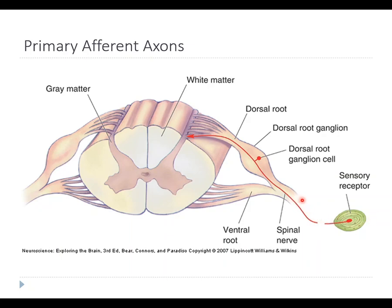The axon from the Pacinian corpuscle forms part of a spinal nerve, which can also contain motor axons from the ventral roots. When a sensory receptor is activated — say something touches this corpuscle — an action potential is generated and travels all the way up the spinal nerve to the dorsal ganglion, but it actually just bypasses the cell body. The cell body doesn't really participate in the propagation of the signal; the action potential goes right past it and then goes into the spinal cord through the dorsal roots.